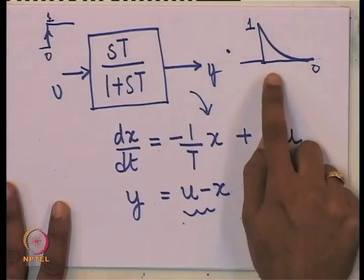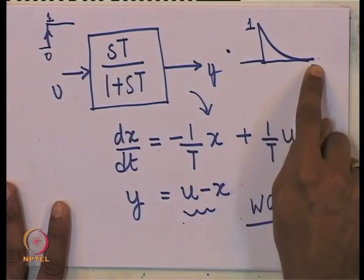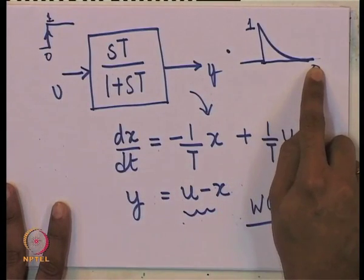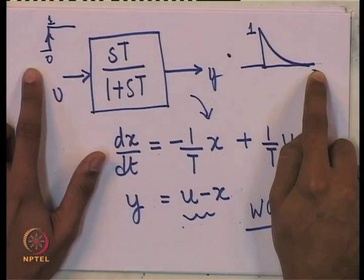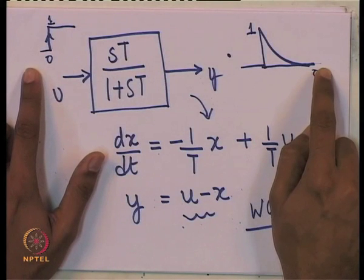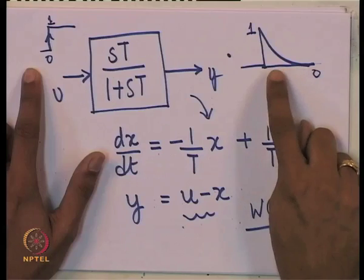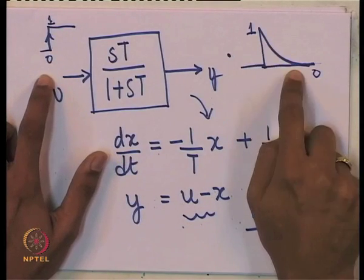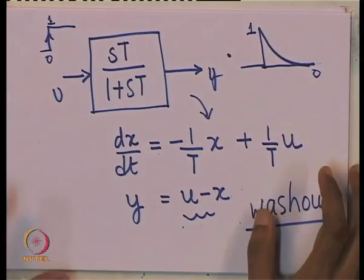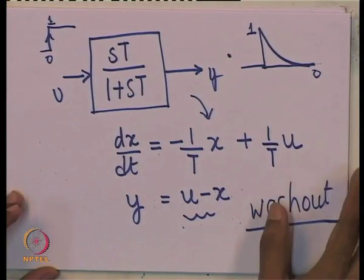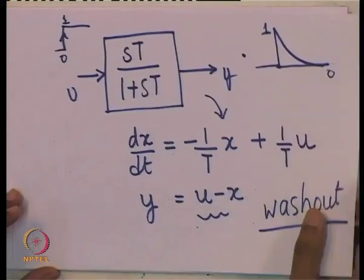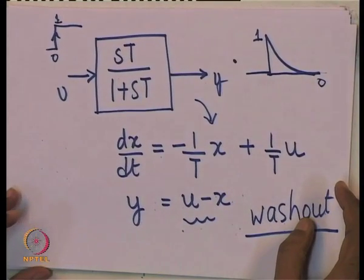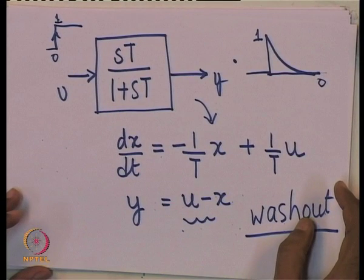The step response of the washout transfer function gives zero in steady state — if you apply a step, you eventually get zero at the output. The transient gain is one, so as soon as the step occurs, the system responds immediately. In this sense, the washout transfer function is different from the first-order block. These are transfer functions you will encounter, but the main regulator transfer function is usually slightly different.